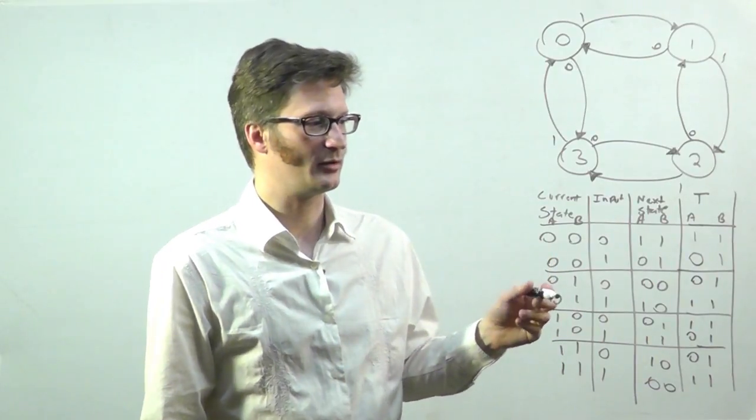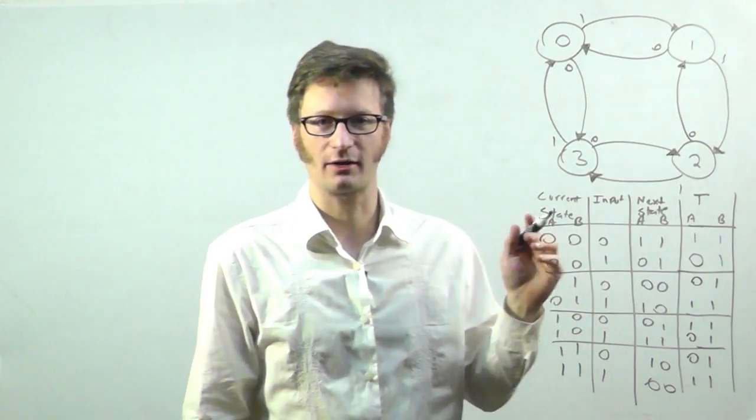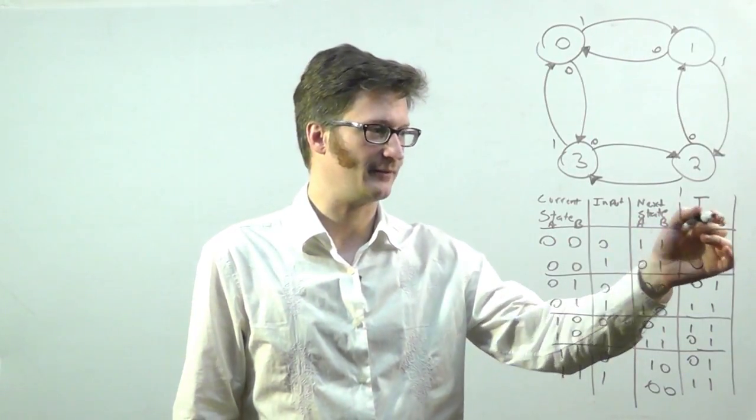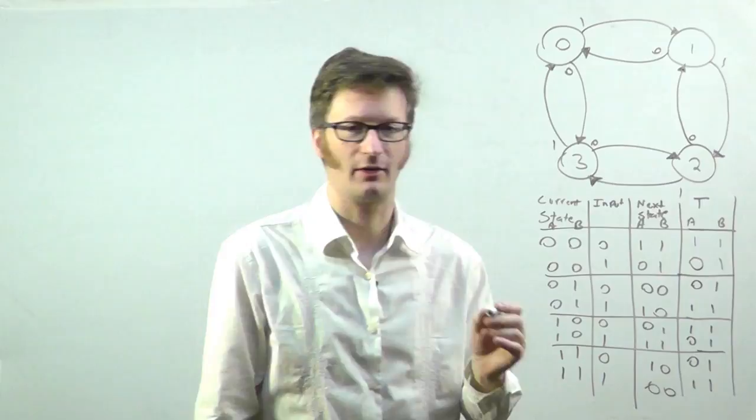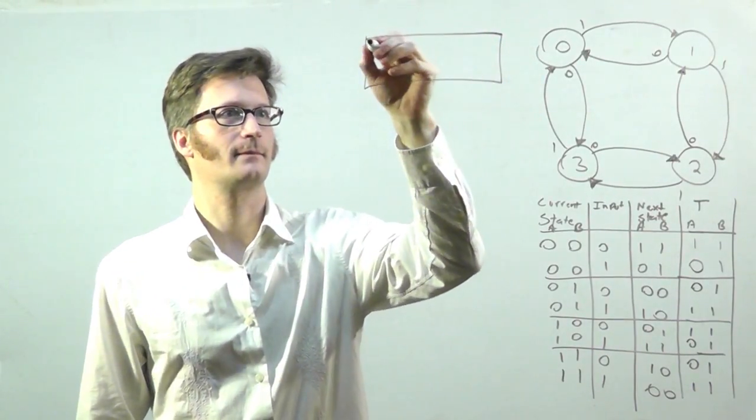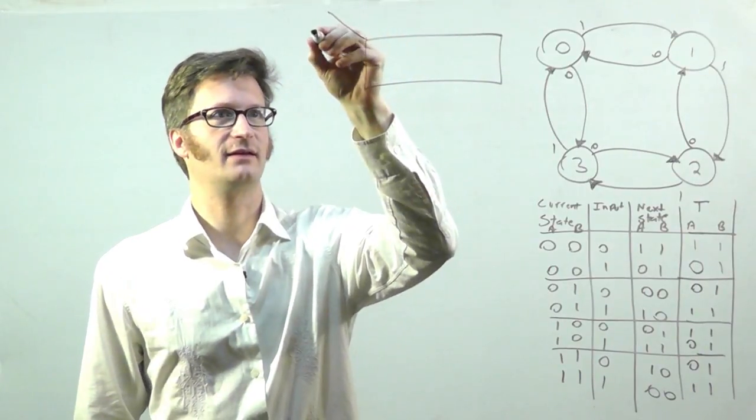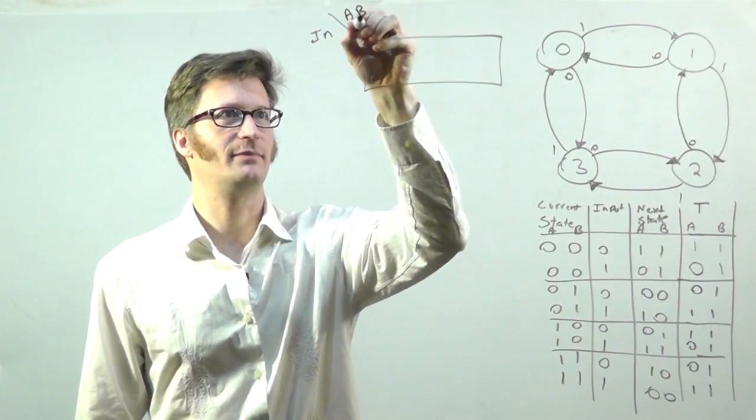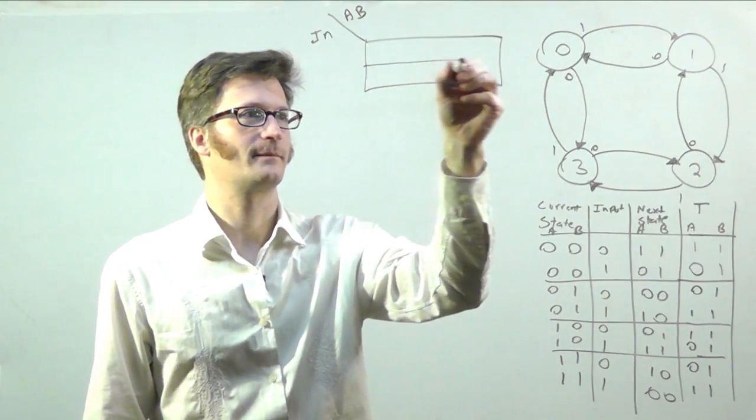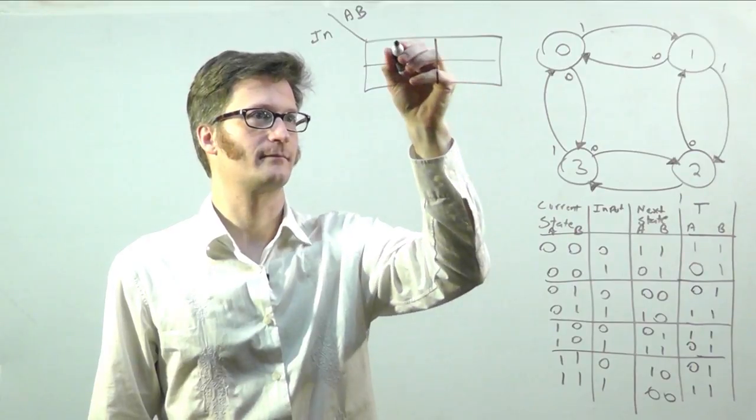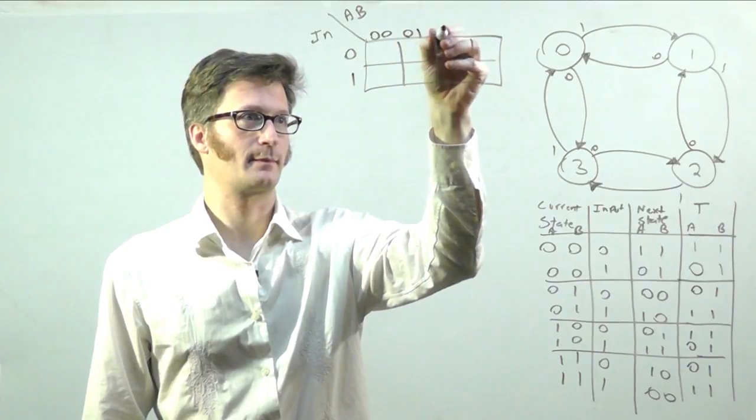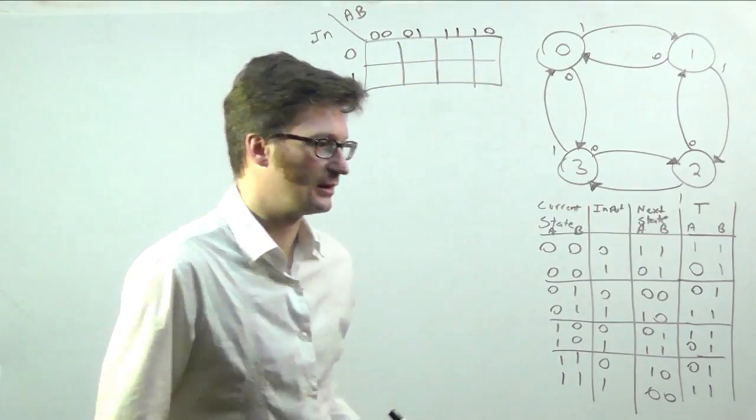So now I'm going to create Karnaugh maps for these columns for flip-flop A and flip-flop B. And so I'm going to do that up here. And this is in, and A, B. Hopefully I'm not going off-screen there.